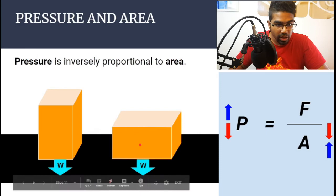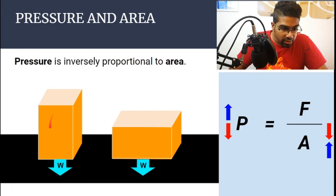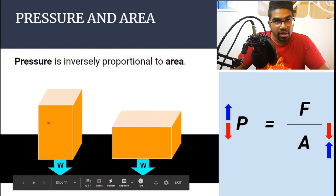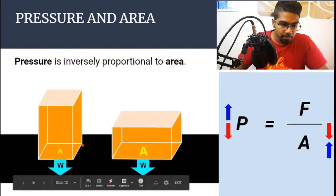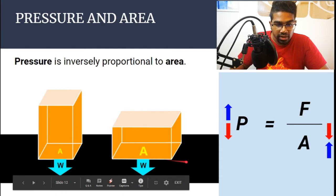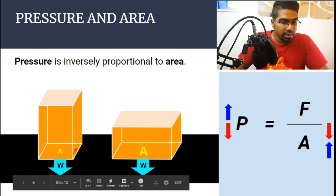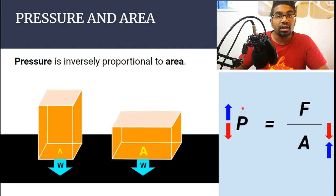Let's look at these two blocks of the same size — they are exactly the same block, but positioned differently. The force exerted by each block on the surface is exactly the same because their weights are the same. However, the block on the left has a smaller area of contact with the surface compared to the block on the right, which has a larger surface area in contact with the surface. Therefore, the pressure exerted by the block on the right, since its area is larger, will be smaller compared to the block on the left where the area is smaller. Since the area is smaller on the left, the pressure will be larger — all under the condition that the force exerted is the same.